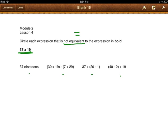So 37 19. Well I know that's the same thing as 37 times 19. So that is equivalent. I cannot circle it. Look at the second one. 30 times 19 minus 7 times 29. Now I see a lot of different things.